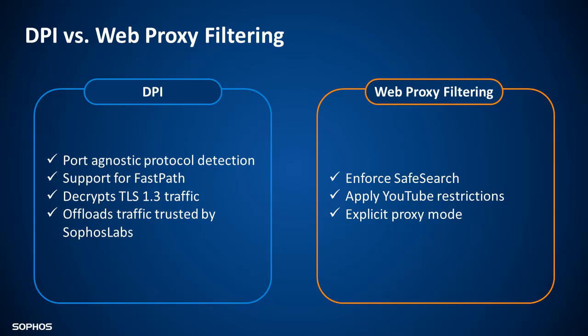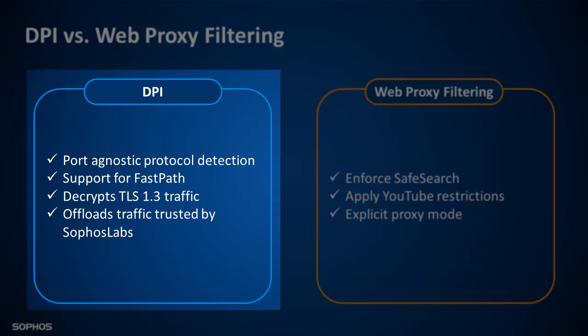We will start by looking at the differences between DPI and web proxy filtering. DPI implements proxy-less filtering handled by the IPS engine. It provides port-agnostic protocol detection and supports the partial or full offload of traffic flows to the network fast path. It can decrypt and scan TLS 1.3 traffic and offloads traffic trusted by Sophos Labs.